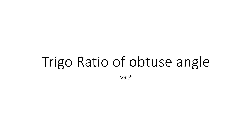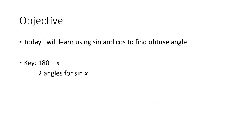After learning the trigonometric ratios of acute angles, today we will learn what the trigonometric ratios of an obtuse angle are. An obtuse angle is basically any angle that is more than 90 degrees. This chapter is like a joke — it's very easy, but it is still slightly more difficult than the previous video. Don't worry, it's actually quite simple.